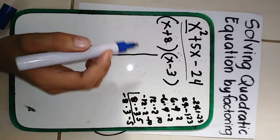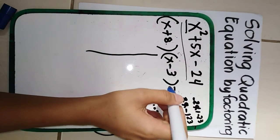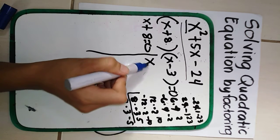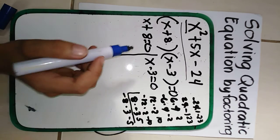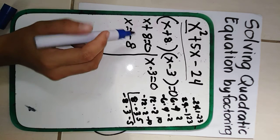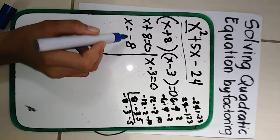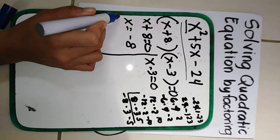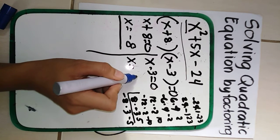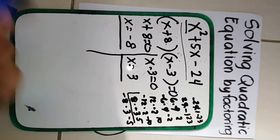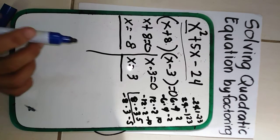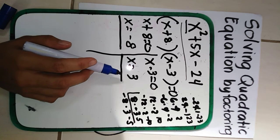Now let's find the roots, or the values of x. We equate each factor to 0: x plus 8 equals 0, and x minus 3 equals 0. Then x equals negative 8 — because we transpose positive 8 and the sign changes to negative 8. That is our first value of x. And x equals positive 3 is the second value of x. So the roots of x squared plus 5x minus 24 are negative 8 and positive 3.